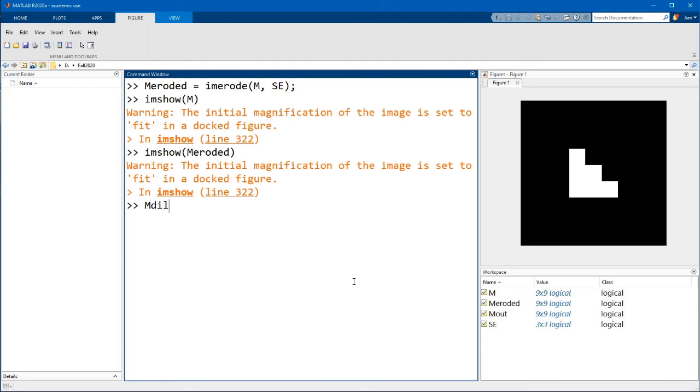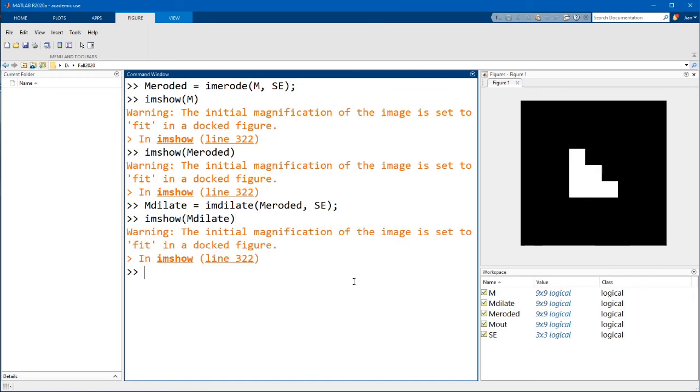And now let's dilate the eroded mask using imdilate but with the same structuring element. If I display this you'll see that this is the same picture that we got when we use the function imopen.